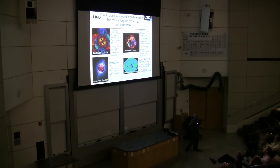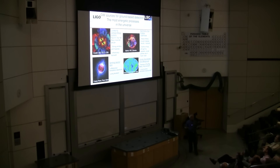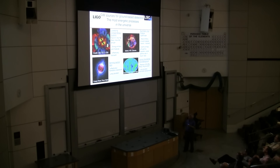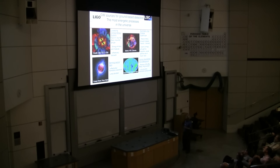Gravitational waves are emitted by anything, including my fist right now — but I'm a pretty weak gravitational wave emitter. Any kind of extremely energetic, strong, accelerating quadrupole moment will produce gravitational waves. I'll be focusing on the ones we've detected so far, which come from binary black holes and binary neutron stars. We're also looking for neutron star–black hole systems, spinning neutron stars like pulsars, core-collapsed supernovae in our galaxy, and ultimately gravitational waves from the early universe.